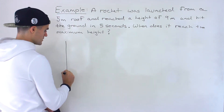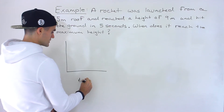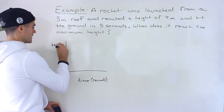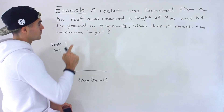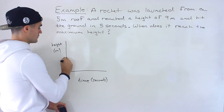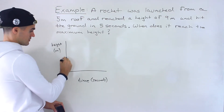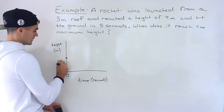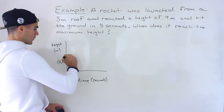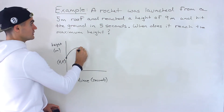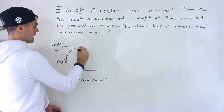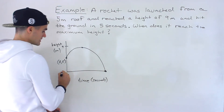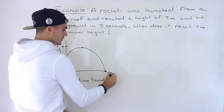To start off, I'm going to draw a diagram of what's happening. We have time here in seconds, and then we have the height over here in meters. We're launching a rocket from a five-meter roof, so this coordinate at time zero has a height of five — we label it (0, 5). The rocket reaches a maximum height of nine meters, and then it hits the ground in five seconds, so that coordinate is (5, 0).